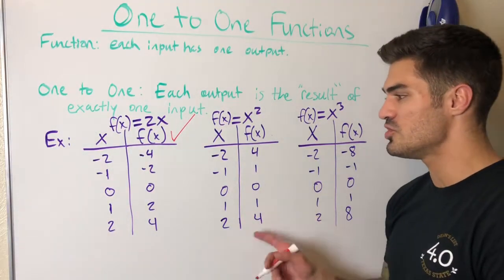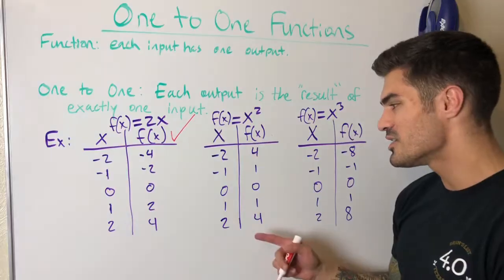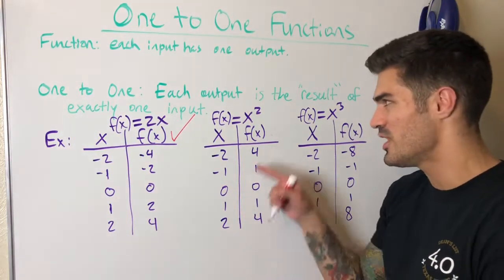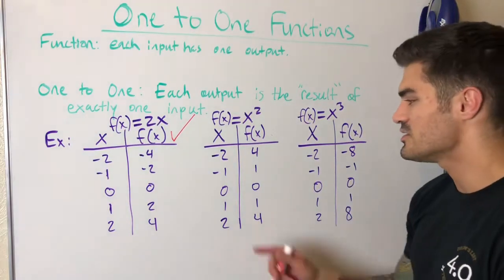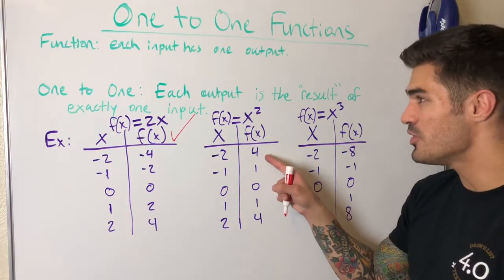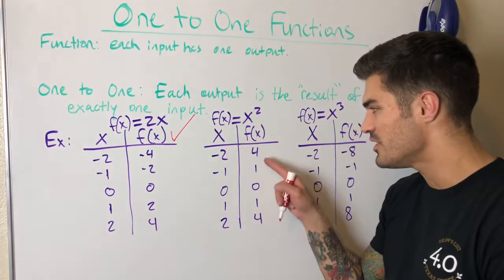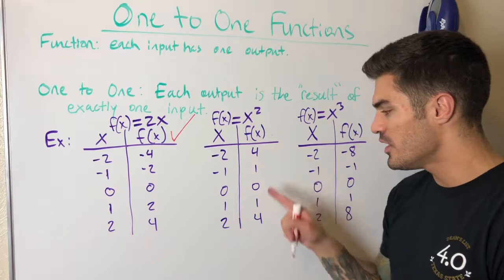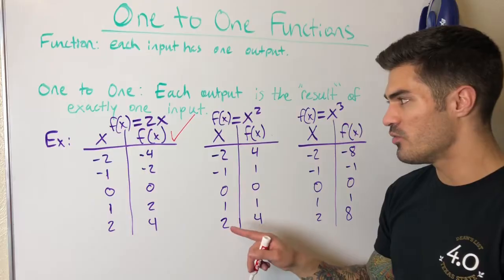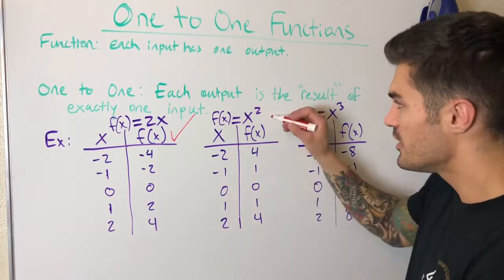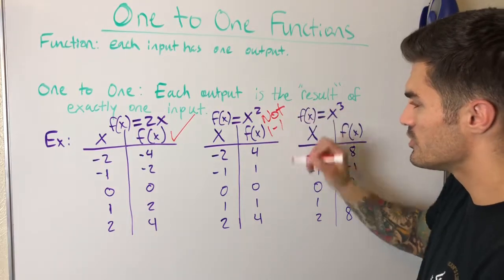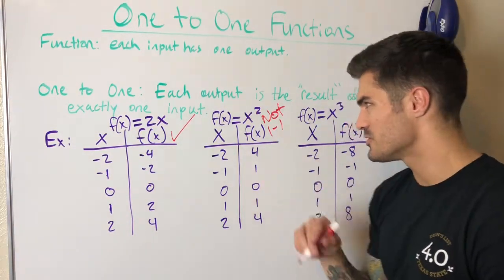Now let's look at f(x) = x². This is a function — each input has exactly one output, you can't square something and get two different values. But is it one-to-one? I need each output to be the result of exactly one input. Look: the output 4 comes from both 2 and negative 2; the output 1 comes from both 1 and negative 1. So this is a function, but it is not one-to-one.